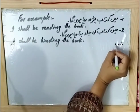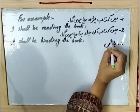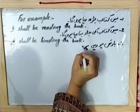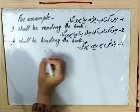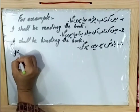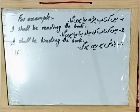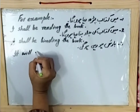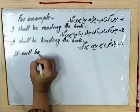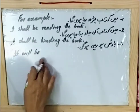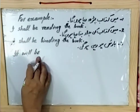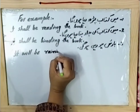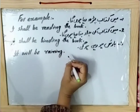Example number three: 'Baarish ho rahi hogi' — it will be raining. For rain, we use 'it.' Since subject is 'it', the helping verb is 'will.' For Future Continuous Tense we use 'will be.' Add '-ing' to 'rain' to get 'raining.' So: it will be raining.